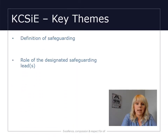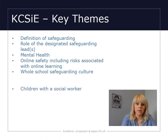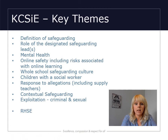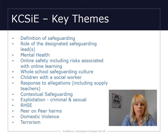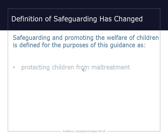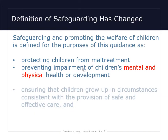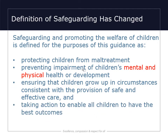The next few slides talk about the key themes running through this year's version of keeping children safe in education. There are a few changes implemented this year — some are minor wording changes, but there are also a few additions. One key change is to the definition of safeguarding, which now explicitly includes preventing impairment of children's mental and physical health or development. Mental health is a key new addition this year, and there is likely to be an increased need for mental health provision given the pandemic and the effect that COVID will have had on some of our students.